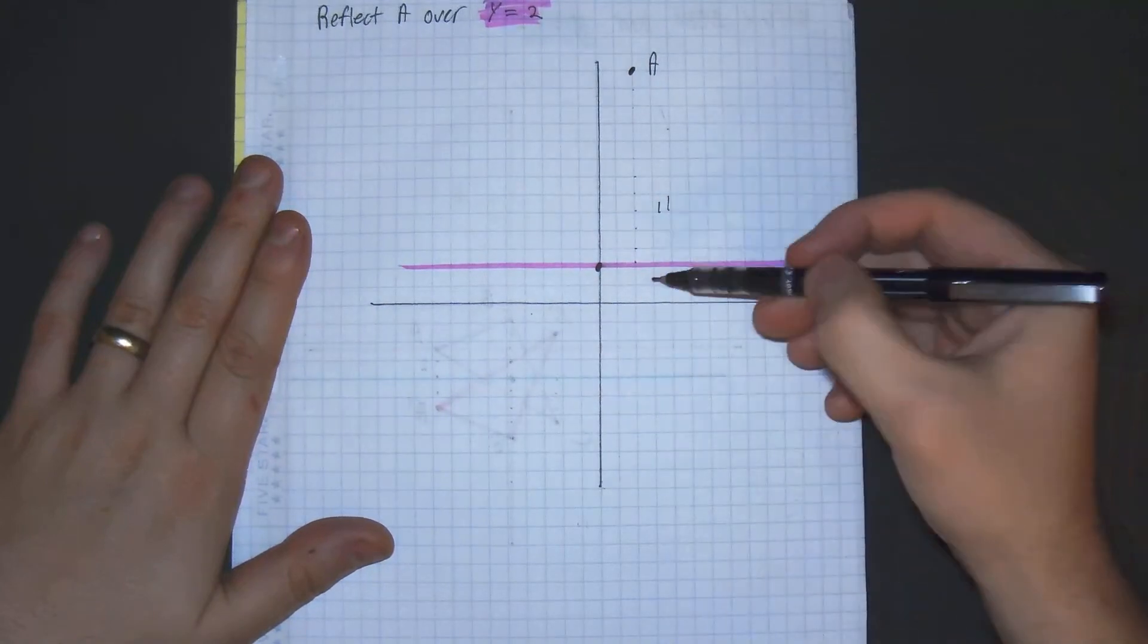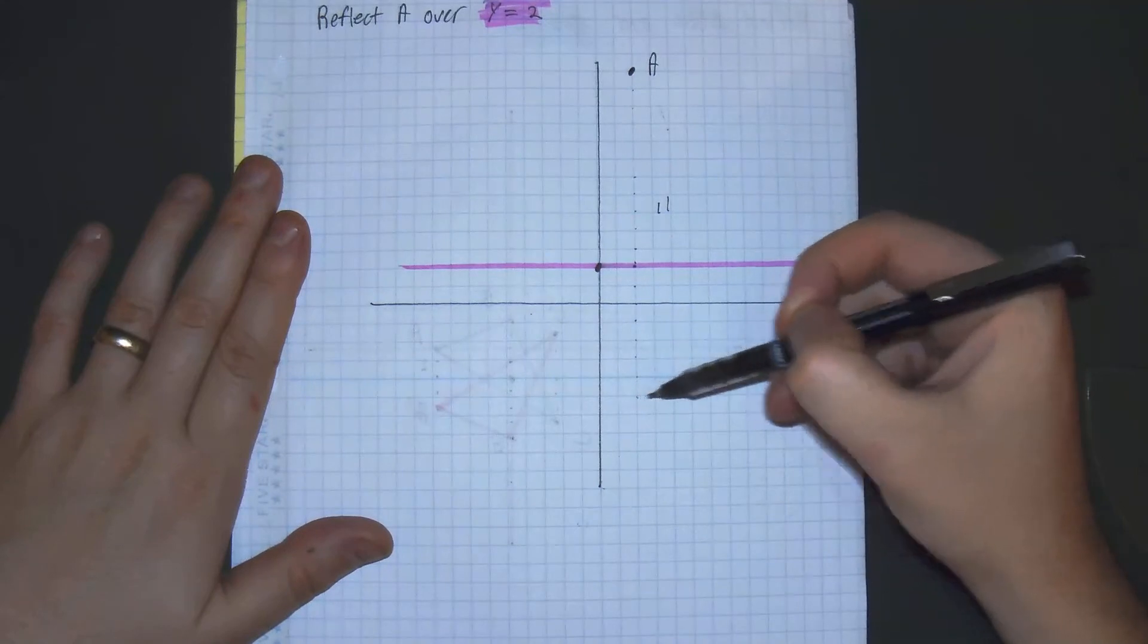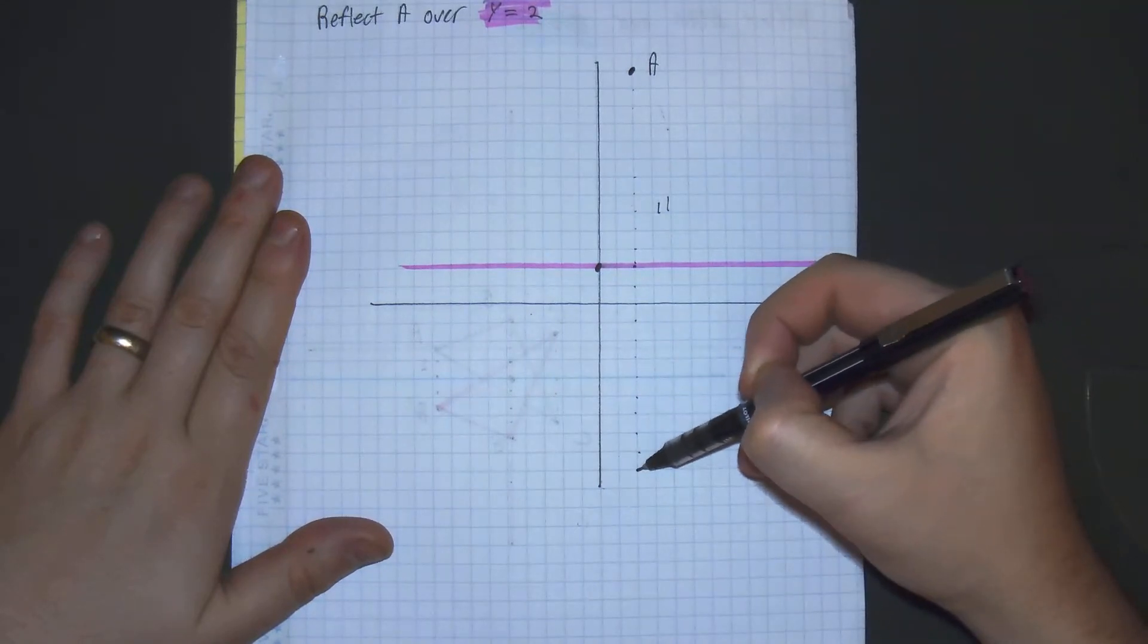Now we count 11 down. 0, 1, 2, 3, 4, 5, 6, 7, 8, 9, 10, 11.